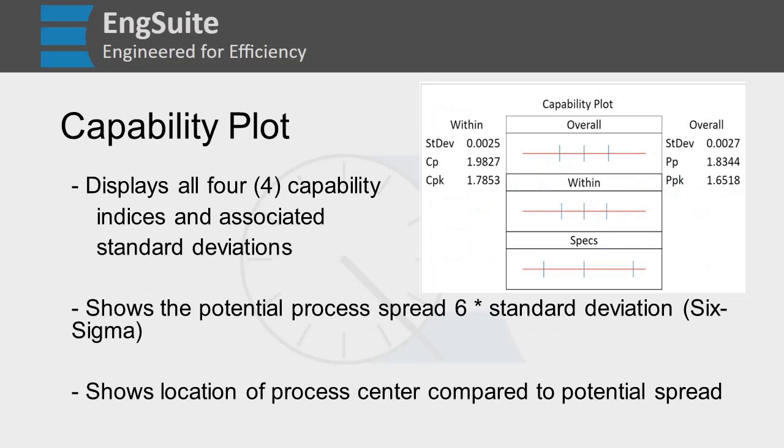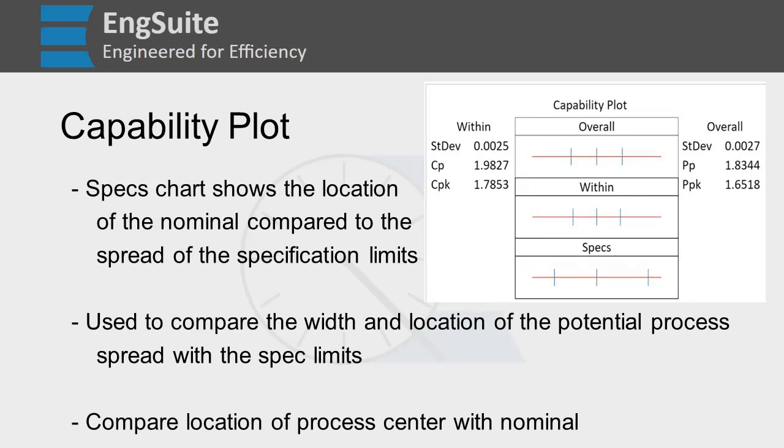It shows the location of the process center compared to the potential spread. You'll notice we have three different charts in here, and they're all saying the same thing.